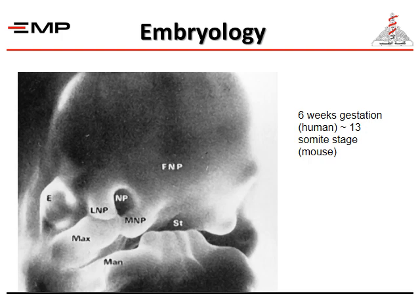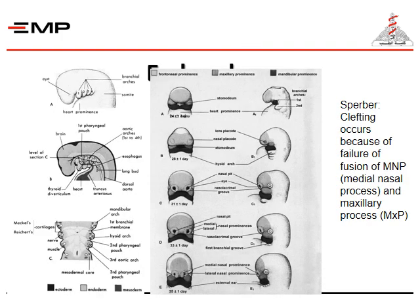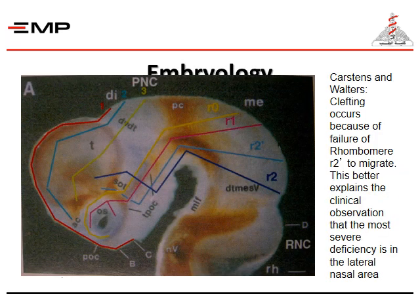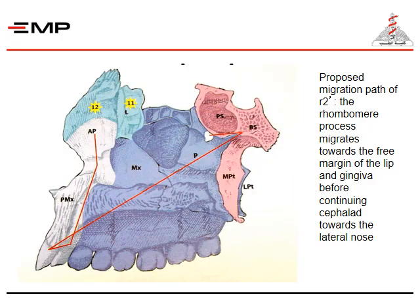Regarding embryology, it's very important to note that the critical period is the first six weeks of gestation up to the 13th somite stage. Clefting occurs because of failure of fusion of the medial nasal process and the maxillary process. Carsten and Walter's cleft enquiries show failure of rhombomere R2 to migrate, which better explains the clinical observation that the most severe deficiency is in the lateral nasal area. The rhombomere process migrates towards the free margin of the lip and gingiva before continuing cephalad towards the lateral nose.